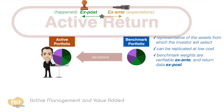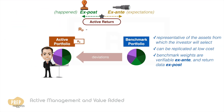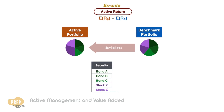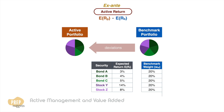Active return is the value added by active management, simply calculated as the return of the active portfolio minus the return of the benchmark. It can be measured ex post or ex ante. The ex ante active return is the expected return of the active portfolio minus the expected return of the benchmark. For example, a hypothetical benchmark may only have five securities, and these are the expected returns of each security. Let's say the benchmark is equal-weighted.